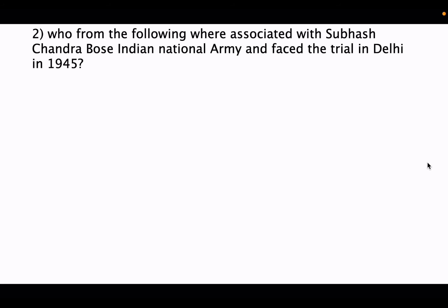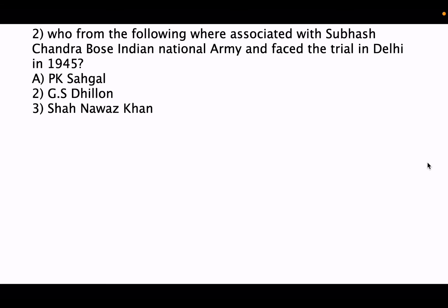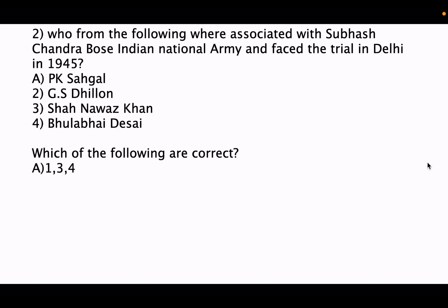Second question: who from the following were associated with Subhash Chandra Bose's Indian National Army and faced the trial in Delhi in 1945? 1. P.K. Sahgal, 2. G.S. Dhillon, 3. Shah Nawaz Khan, 4. Bhulabhai Desai. Options: A: 1, 3, 4 — B: 1, 2, 3 — C: 2 and 4 — D: 1, 2, 3, 4.